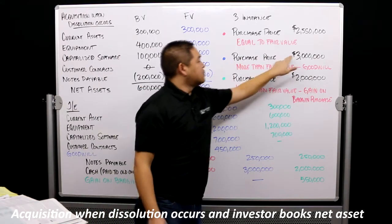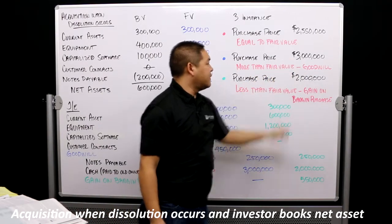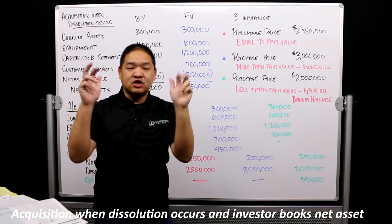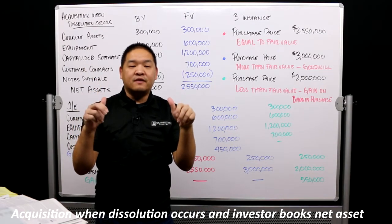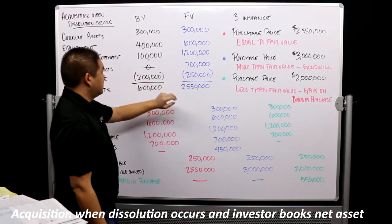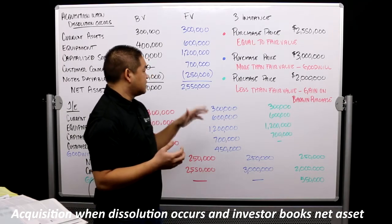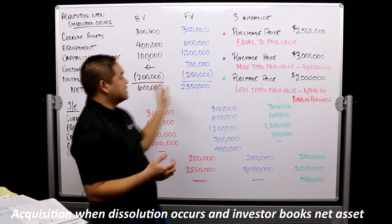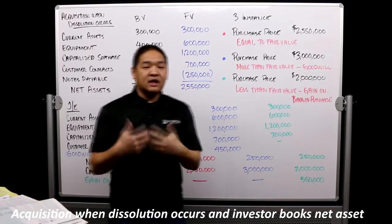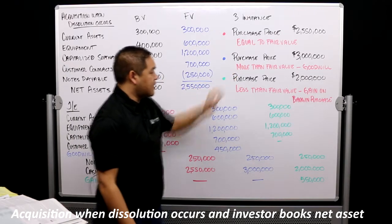Number two: purchase price is more than fair value. Fair value is $2.55 million but we're going to pay $3 million, so we're going to have Goodwill. We allocate the additional amount between $600,000 book value and $3 million to the undervalued assets, and then whatever's left goes into Goodwill. So we'll have Goodwill in this situation.